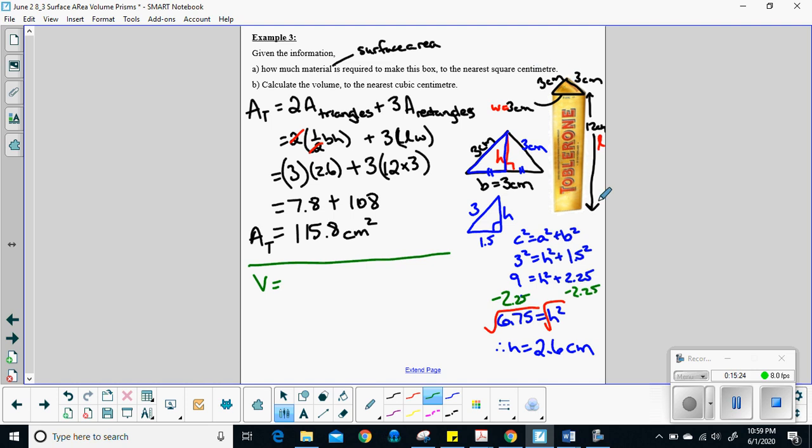Now, let's look for volume. Volume of a triangular prism is going to be the area of my base times my height. So the area of my triangle. Oh, we already know that.